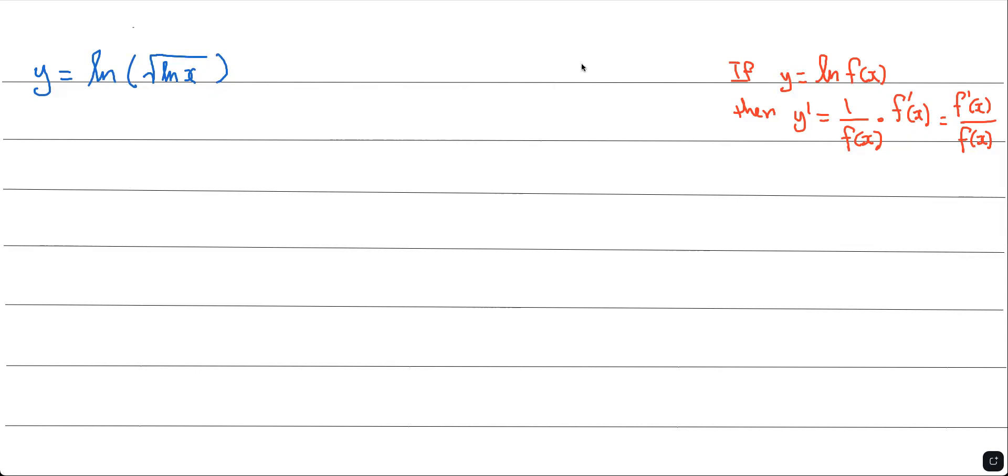A few things we must know: if y equals ln of f(x), then the derivative y prime will be 1 over f(x) times f prime of x, which gives you f prime of x over f(x).